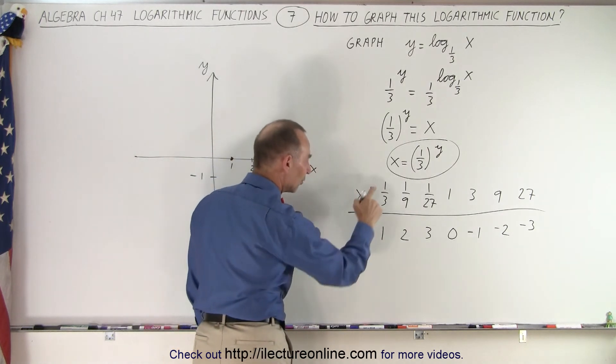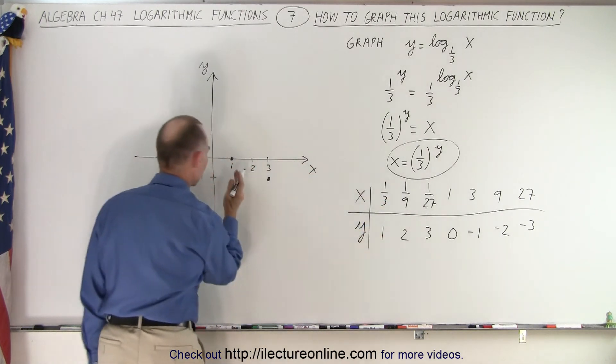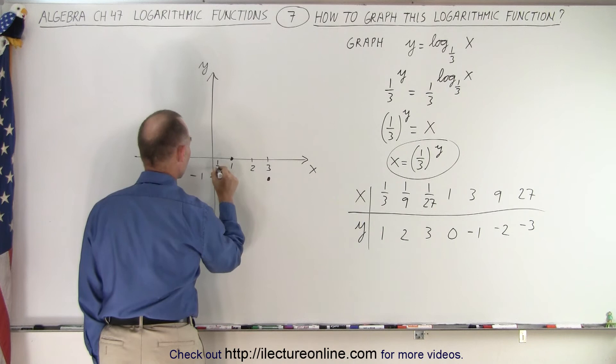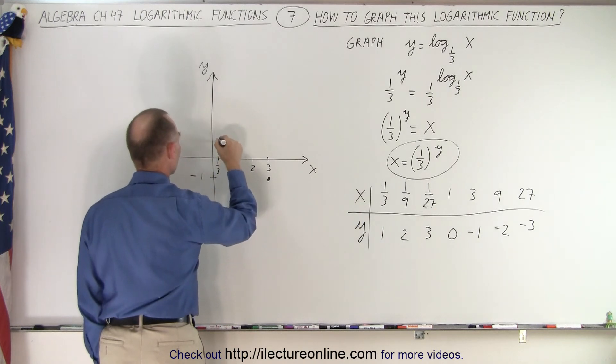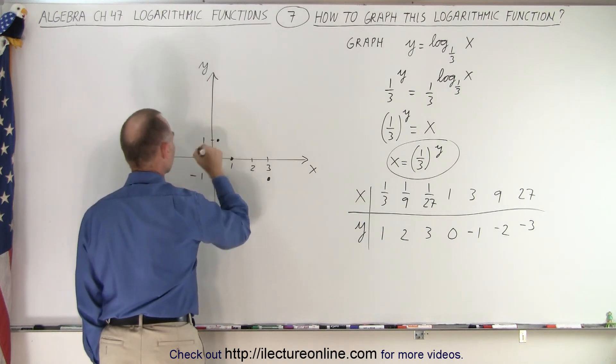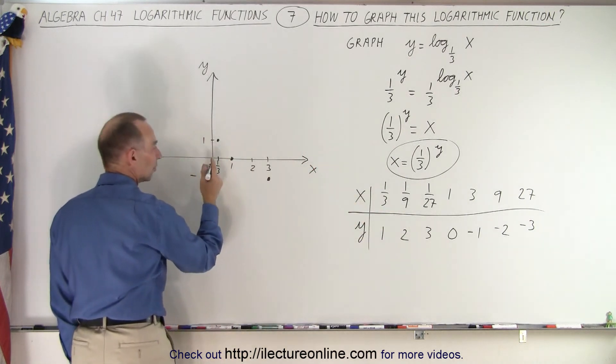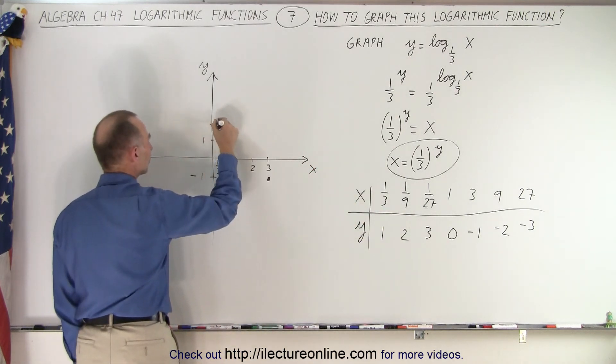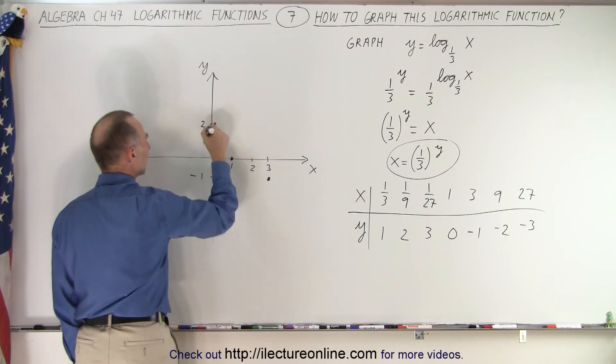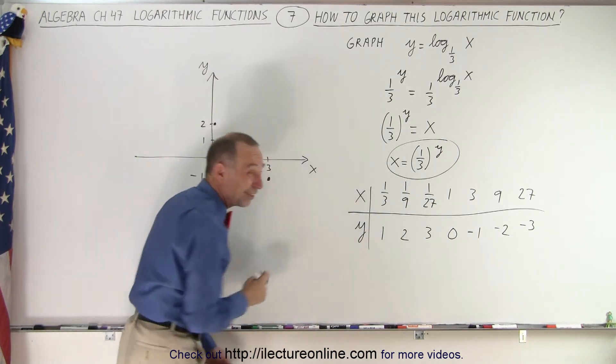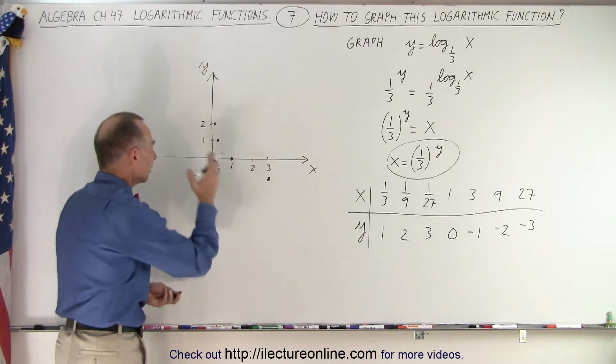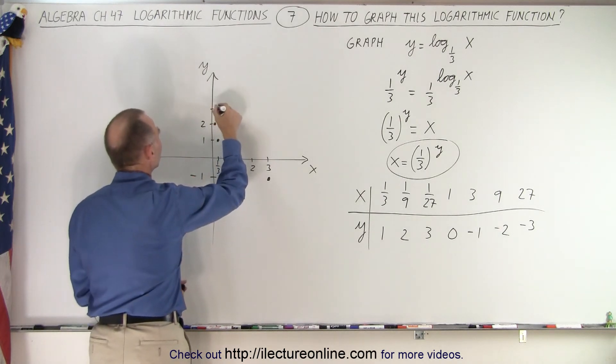On the other side, when x is 1/3, y is 1. So when x is 1/3, which is about right here, y is equal to 1. When x is equal to 1/9, which is even closer to the y axis, then y is equal to 2. And when x is 1/27, which is almost right on the y axis, then y is equal to 3.